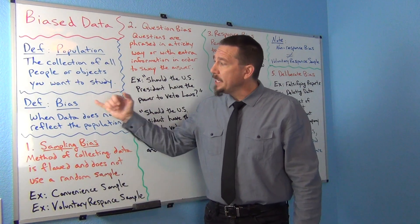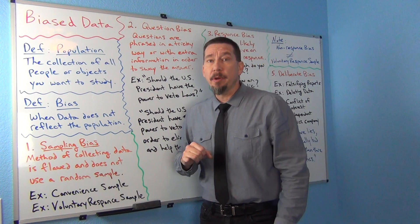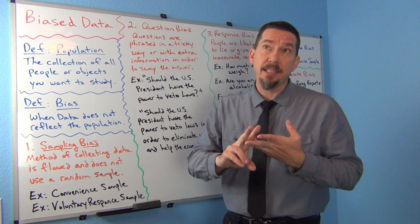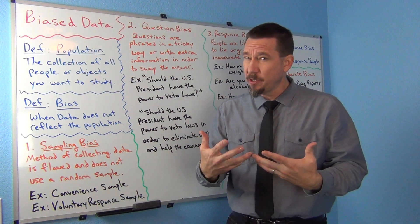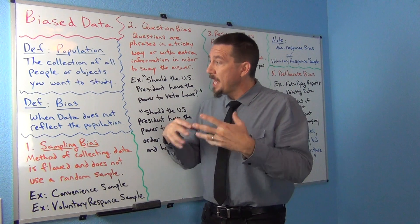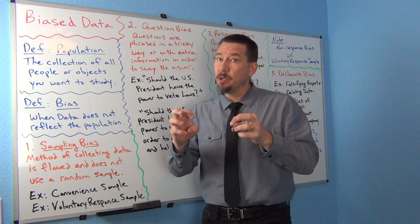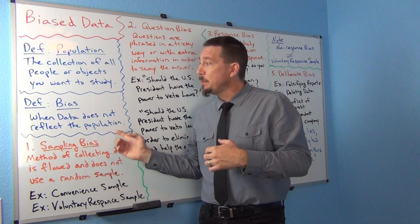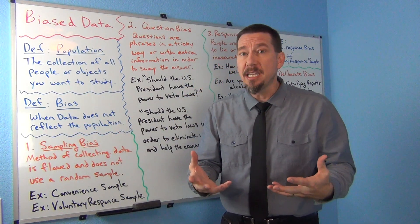So bias. Remember I kind of told you that we need to have, in stats we have different definitions for terms than maybe what you're used to. When a statistician says bias or the data was biased, they're referring to when data does not reflect the population.